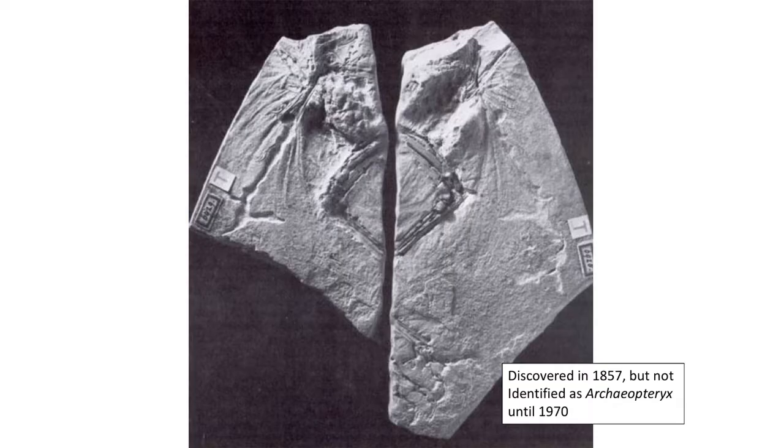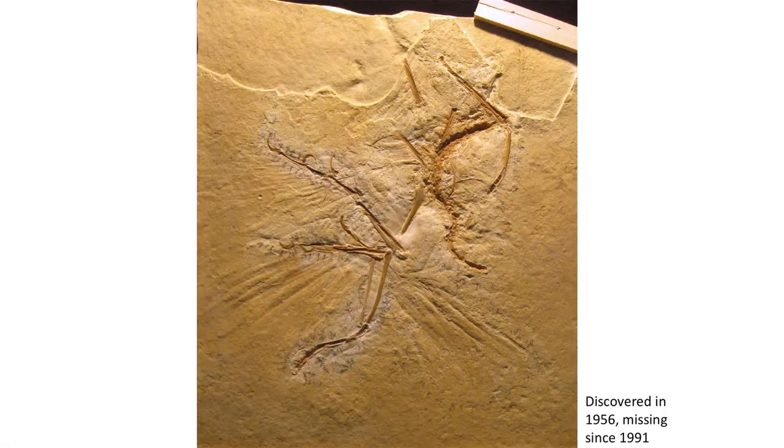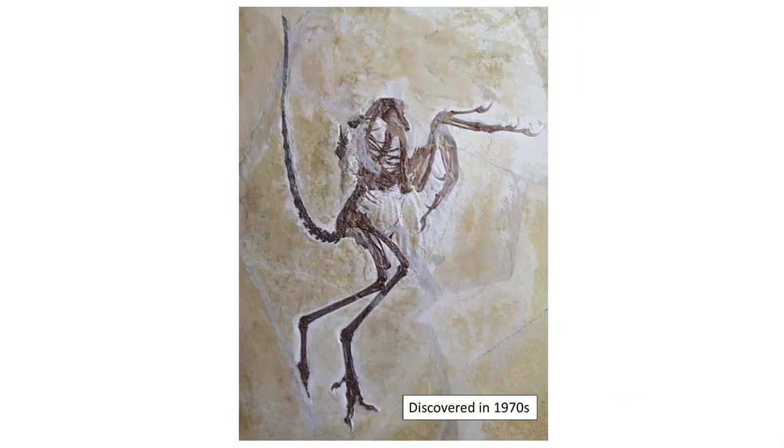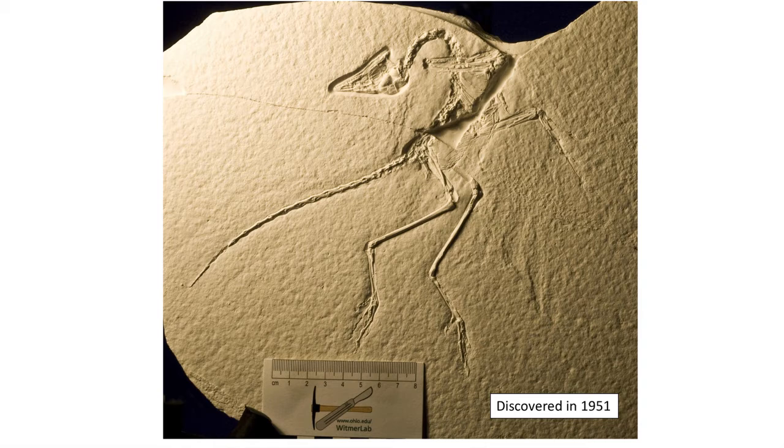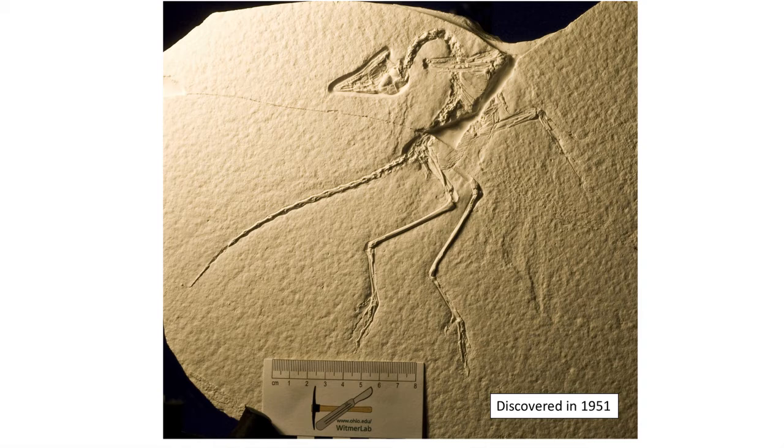In 1868, Thomas Huxley used the discovery and description of Archaeopteryx as a transitional link between dinosaurs and birds, and over the years numerous specimens have further supported his initial ideas. Twelve specimens have been recovered from the Solnhofen limestones, five of which have been discovered since 1990. Several of these specimens exhibit exquisite feather impressions.